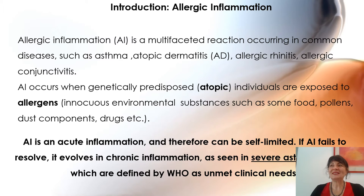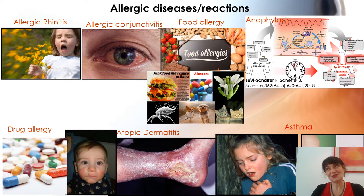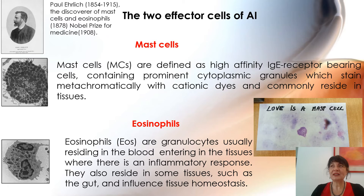The reactions — and this is very important — can be a self-resolving acute inflammation. However, in most cases, especially in severe asthma and atopic dermatitis, which have been defined by the WHO as medical needs, it is chronic. I also show you some colorful pictures about allergies and allergens, to remind you that we can be allergic to drugs. The two main effector cells are the mast cells and eosinophils — the cells that by releasing their mediators cause the symptoms of allergy.